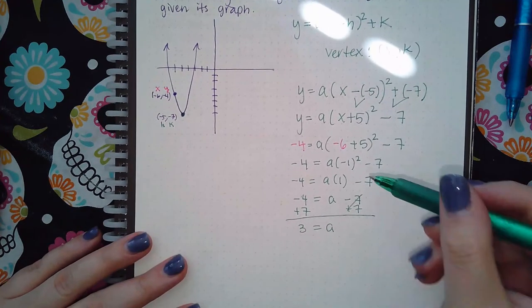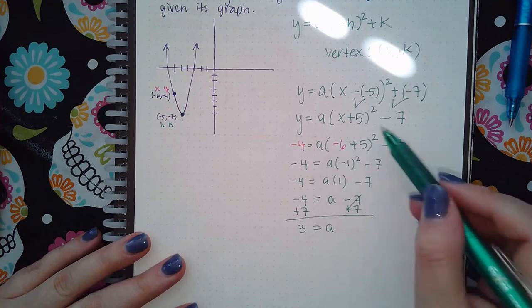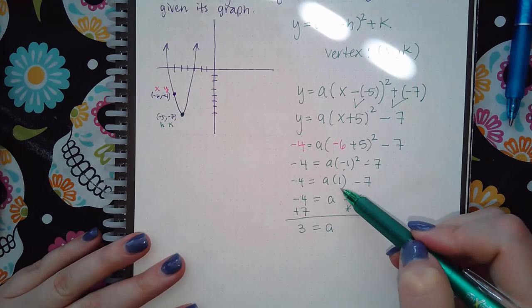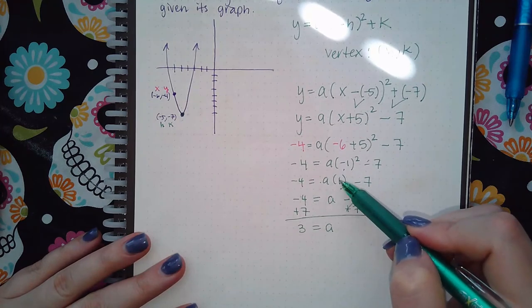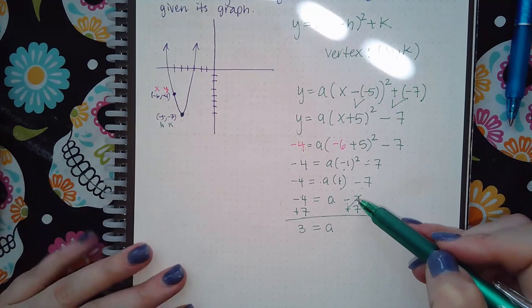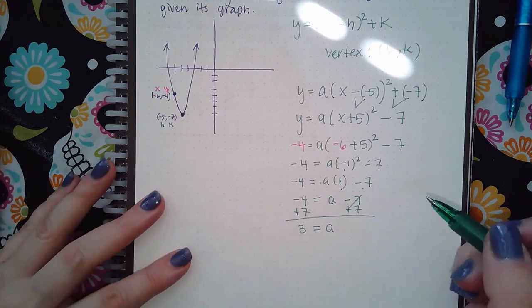Now notice I did have to follow my order of operations here. Do what's inside the parentheses first, then square, use your exponent, then multiply, and then I couldn't subtract because a and 7 are not like terms. So all I could do is solve for a by moving the 7 over.